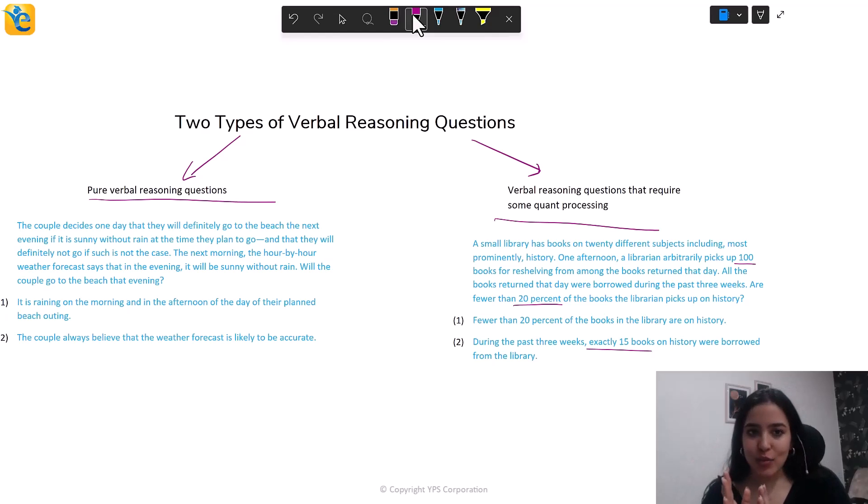Again, one tests pure play verbal reasoning, the other adds a layer of Quant reasoning. Now, while there are two types of questions, from a skill set standpoint, you need the same base skill set to solve such questions correctly and efficiently. So that's one good news. So now let's just actually talk about these skills that you need, irrespective of which type out of these two you're at. All right, let's go.